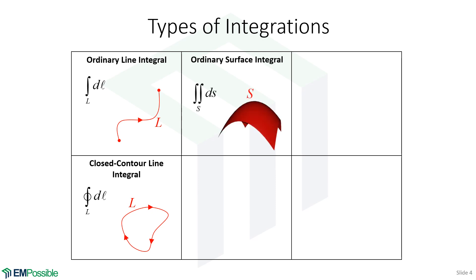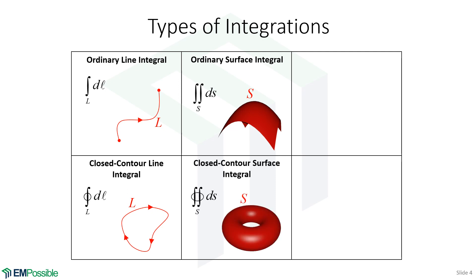We then move on to an ordinary surface integral. This is a double integral where we're integrating something over a surface. If we're integrating essentially nothing other than differential surface over the surface, what we end up calculating is total surface area. If that surface encloses a volume perfectly, we would call that a closed contour surface integral. There's very little difference mathematically between these two other than the closed contour surface integral perfectly encloses a volume.